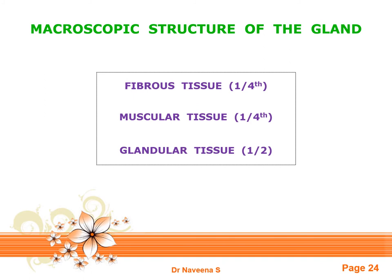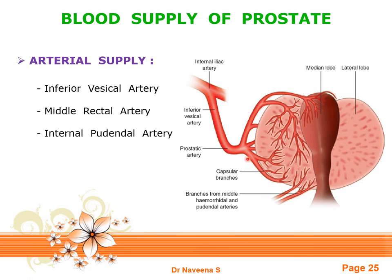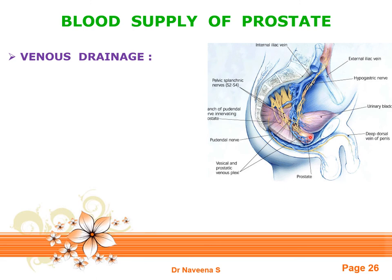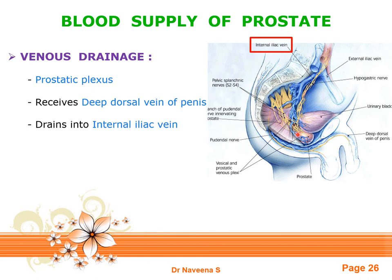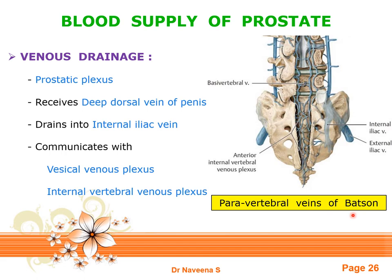The arterial supply of the prostate gland comes from the inferior vesical artery, middle rectal artery, and internal pudendal artery — all branches of the anterior division of the internal iliac artery. Veins draining the gland form the prostatic venous plexus, which receives the deep dorsal vein of the penis and drains into the internal iliac vein. The prostatic venous plexus also communicates with the internal vertebral venous plexus posteriorly through communicating veins known as the paravertebral veins of Batson, which play a major role in metastasis of prostatic cancer into the vertebral column.